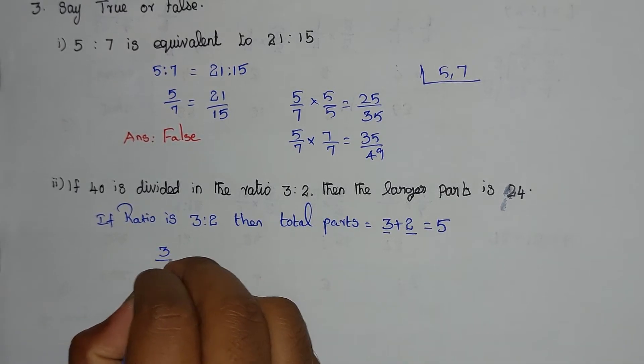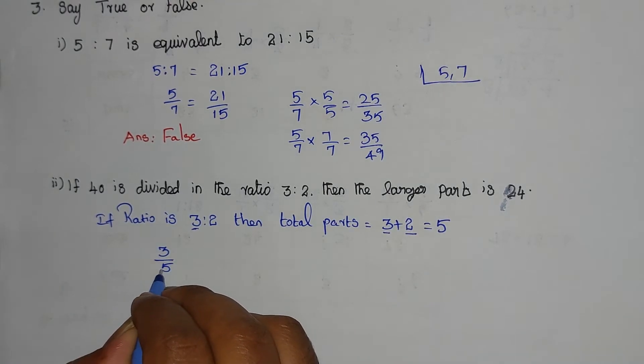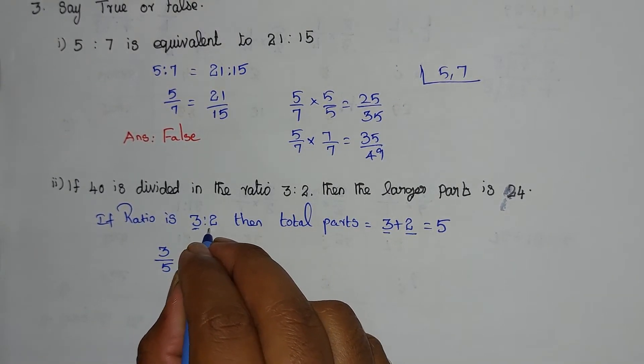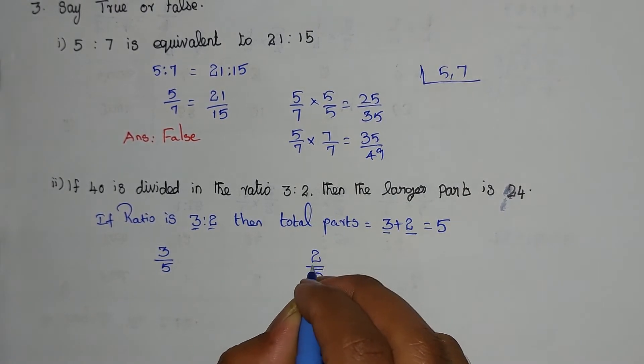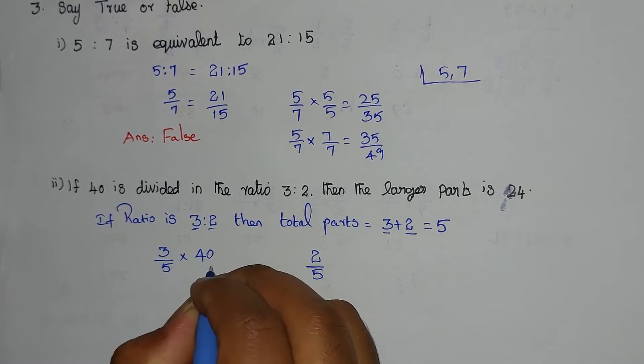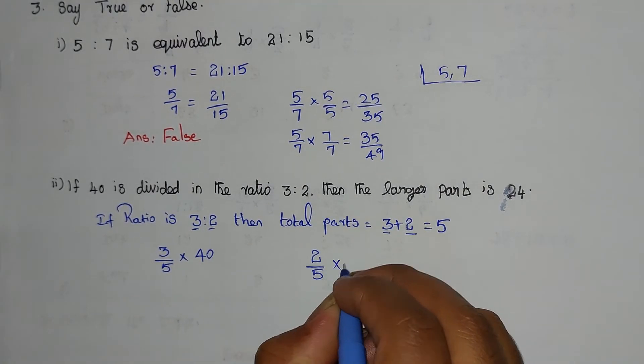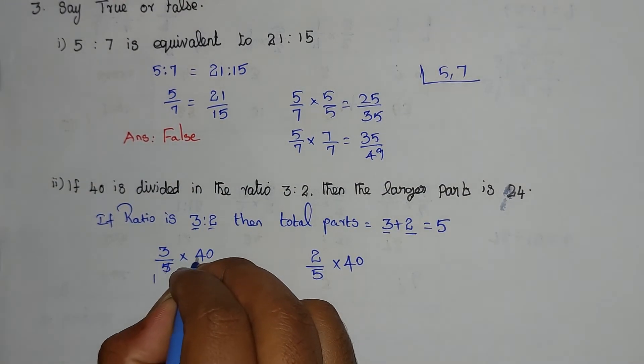3 by 5 - out of 5 parts, there are 3 parts. 2 by 5 - out of 5 parts, there are 2 parts. We multiply by 40.